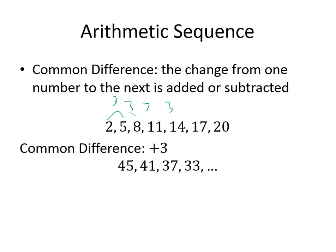The next one — 45, 41, 37, 33 — has a common difference of minus 4. We're subtracting 4 all the way across. Now, if one of the differences does not match up with all the others, then it is not an arithmetic sequence. They have to have the same difference all the way across. If any of them are different, it is not an arithmetic sequence.